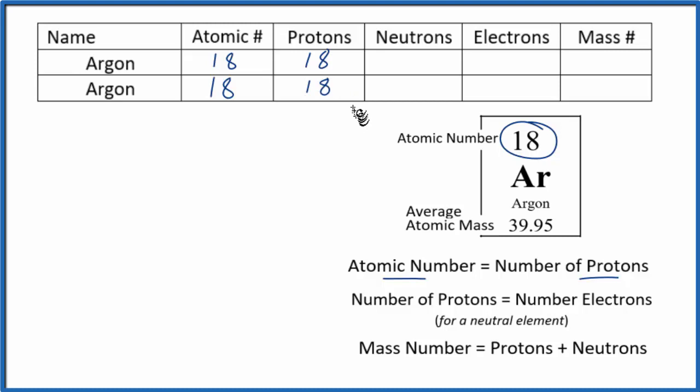All isotopes of argon have 18 protons - that's what makes it argon. On the periodic table, when we see Ar written like this, that means it's a neutral element, and the number of protons equals the number of electrons. So since we have 18 protons, we have 18 electrons.